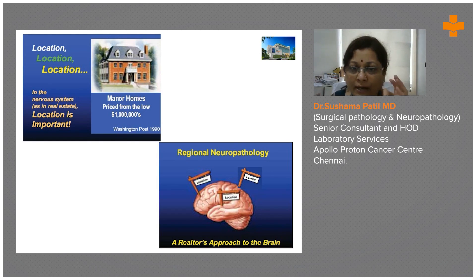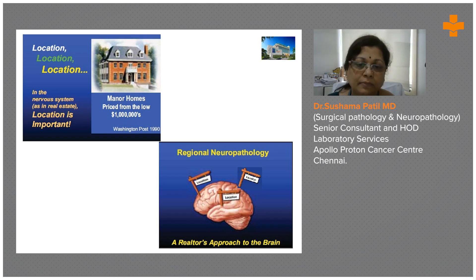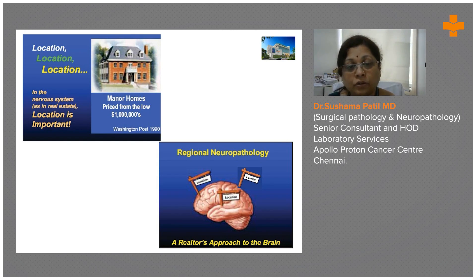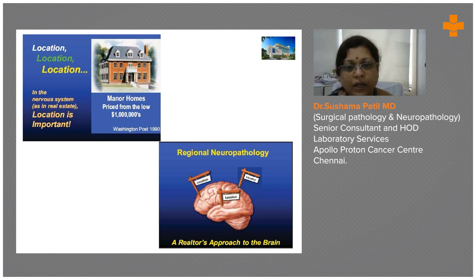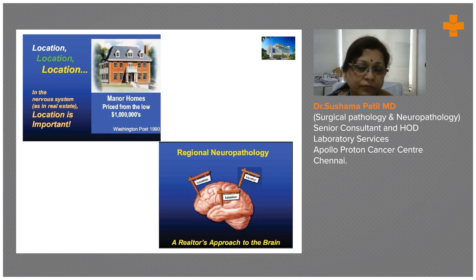When it comes to neuropathology and dealing with tumors, it is location, location, location. Where the tumor is located decides everything — even a benign tumor in the brain stem will be detrimental; the patient may be dead in a couple of weeks. Whereas a large tumor in the hemispheres can be resected and the patient can still do well. That is why I spent so much time explaining the different structures, vital structures, where to look, and how to evaluate the samples.